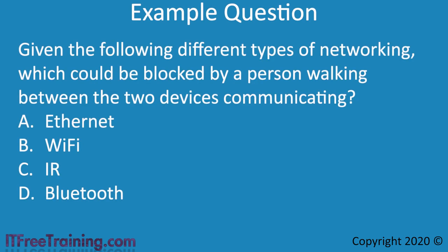Let's look at a sample multiple-choice exam question. Given different types of networking, which would be blocked by a person walking between two communicating devices? By understanding how different networking types work, it is easy to eliminate wrong answers. Out of the options, IR — infrared — can be easily blocked by a person or object blocking the signal, so C is the correct answer.